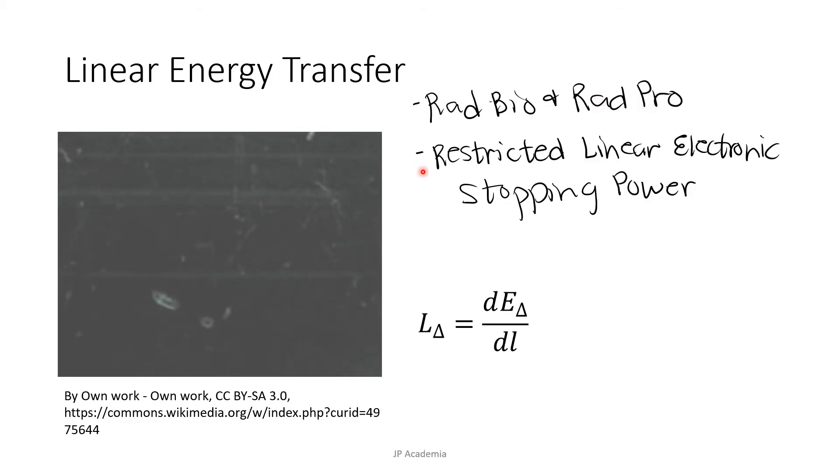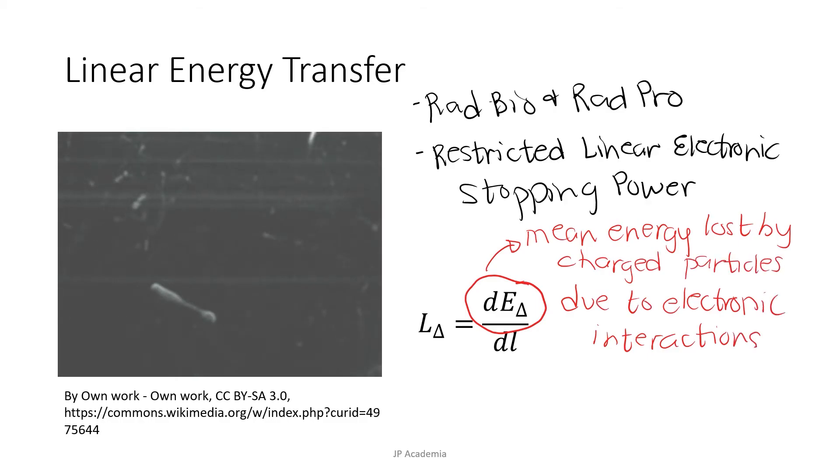This quantity is useful in radiation biology and radiation protection to describe the quality of ionizing radiation according to the density of ionization. dE delta shown in the equation is the local mean energy absorbed by the media due to the electronic interactions or collisions lower than a specified cutoff value delta over the traversed distance dL. This depends on the nature of radiation and on the material traversed. This picture on the left is a diffusion cloud chamber with tracks of ionizing radiation, specifically alpha particles, where we can see the track of ionization. It shows a dense ionization.